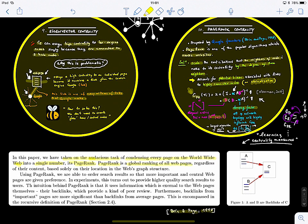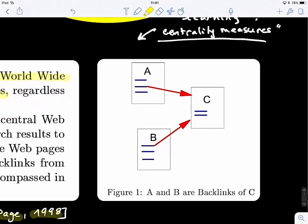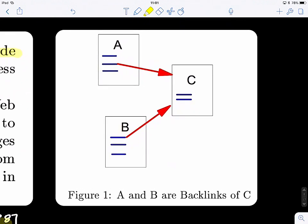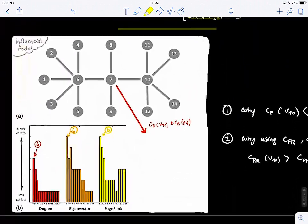So, page rank is a global ranking of all web pages, regardless of their content, and it's basically solely based on their location in the web's graph structure. So, they build a structure, they model this problem as a graph. And here, if you guys remember earlier, we talked about what we call outgoing, these are outgoing connections, but they are ingoing to C here. They call them backlinks of C. So, you can see that the vocabulary of graph theory changes with context, application, the field, but the concept is the same.